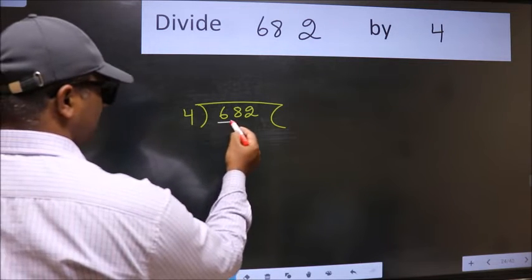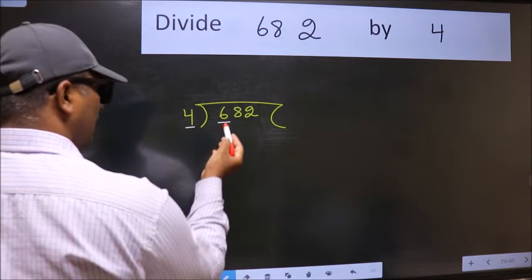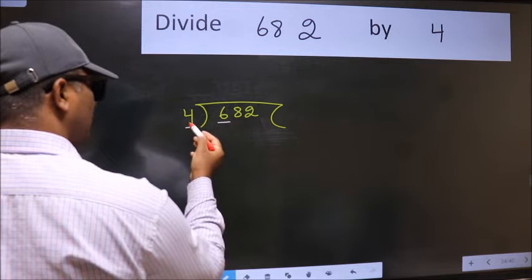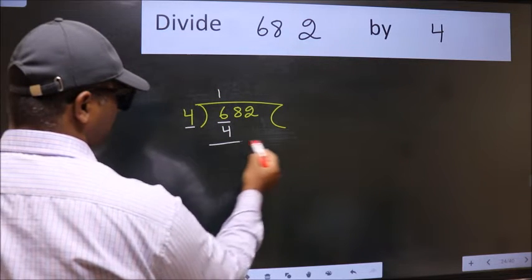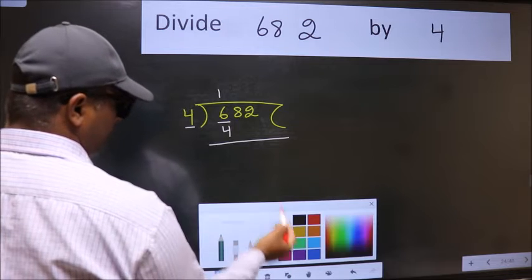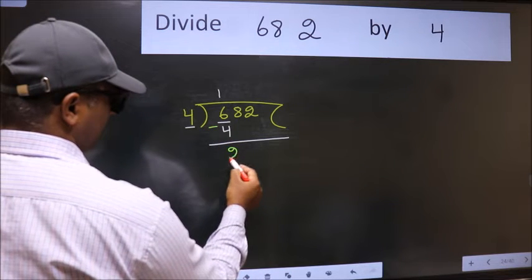Here we have 6 and here 4. A number close to 6 in the 4 table is 4 times 1 equals 4. Now we should subtract. We get 2.